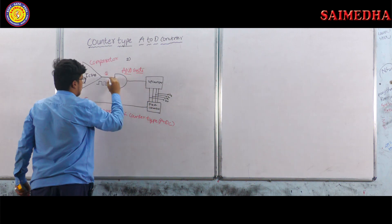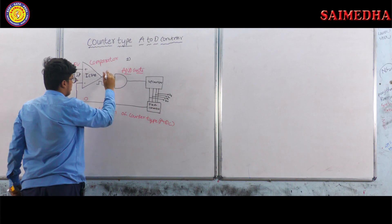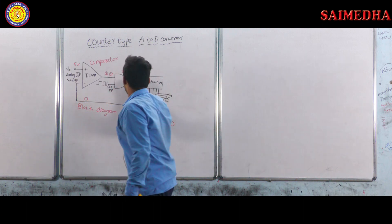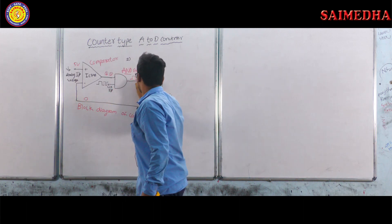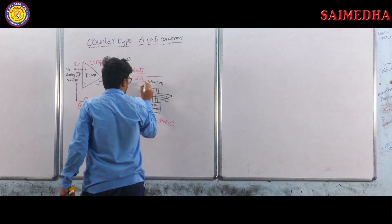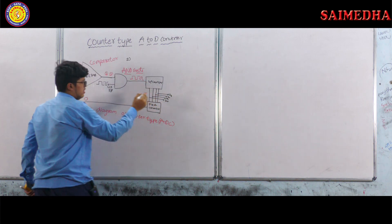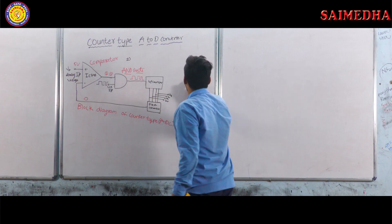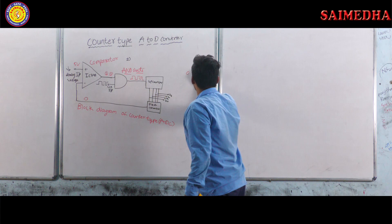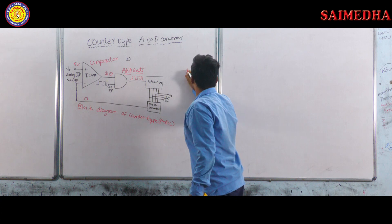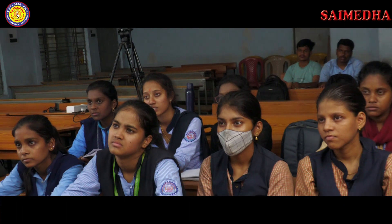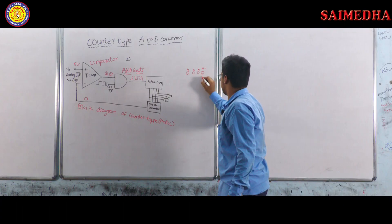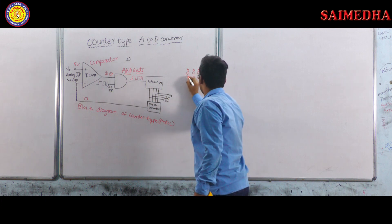The AND gate multiplies the inputs, and since the comparator output is one, the clock pulse passes through the AND gate to the up counter. Initially the up counter is zero; after receiving the first clock pulse, the LSB bit is incremented by one, so it becomes 001.